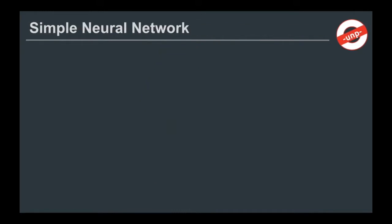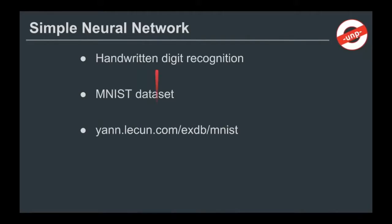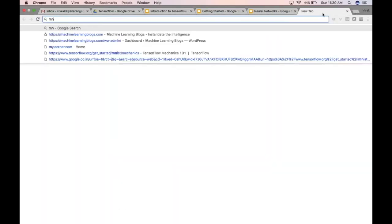The example we are going to do today is a simple neural network which will do handwritten digit recognition. We are going to use something called the MNIST dataset for doing this handwritten digit recognition. This MNIST dataset is actually a very popular dataset, available at Yann LeCun's website where you can directly download it and check out what the data looks like. Let me google what an MNIST dataset looks like.